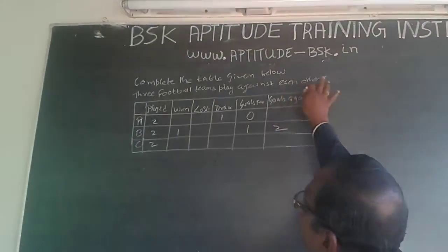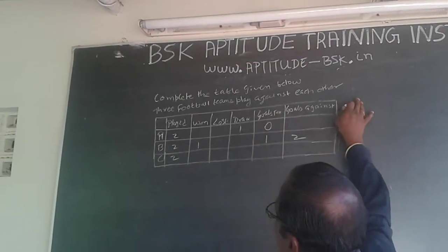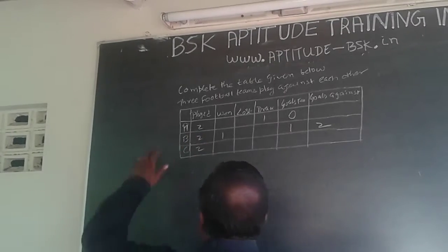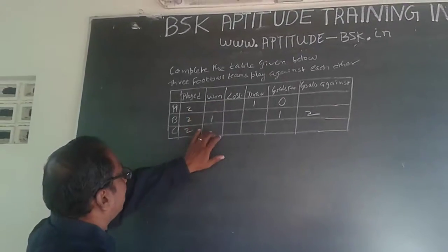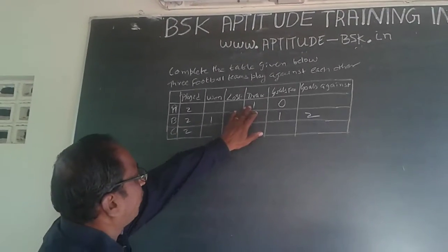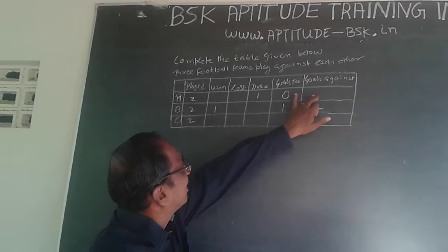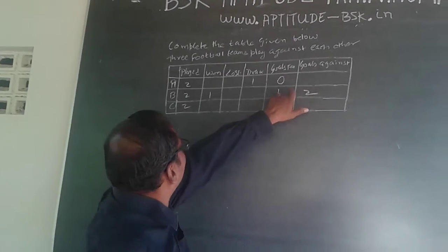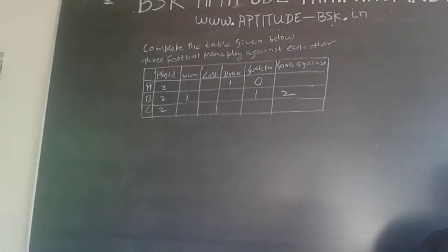The question is to complete the table. Three football teams play against each other - A, B, and C. Games played is 2, 2, 2. Wins: B has 1, A and C not given. Loss: nothing given. B has drawn 1. Goals for: A is 0, goals against nothing given. Goals for is 1 for B and against is 2. Others are left blank, so we'll have to fill up the table.